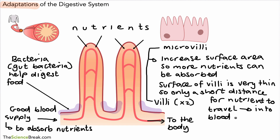So here we have the key adaptations of the digestive system. We've got the microvilli and the villi with two bullet points relating to those. We also have a good blood supply labelled on the left-hand side, and don't forget the bacteria that are present as well. These are the key adaptations of the digestive system, specifically the small intestine, which help to absorb food as it is digested and made into those small molecules we've been talking about.